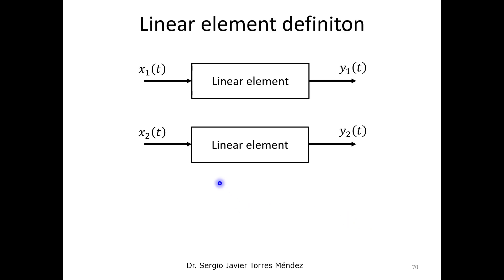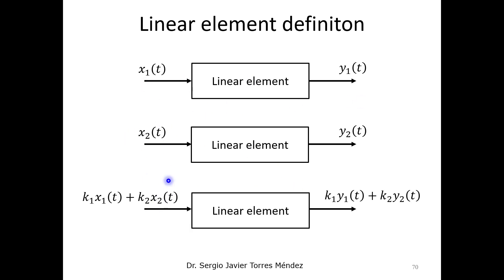When we talk about linear elements, we assume the superposition principle applies. This means that if we have two linear blocks with inputs and outputs and we relate the two inputs with a linear equation, we get a linear output from those two blocks.